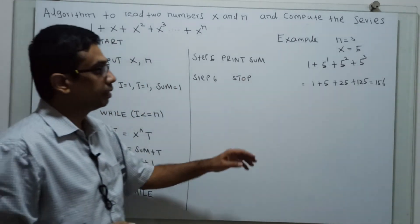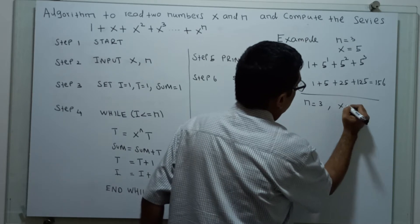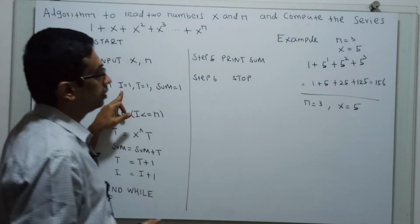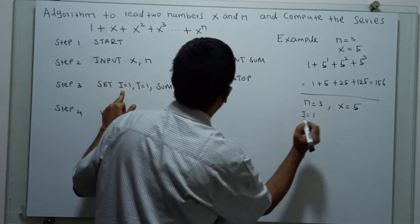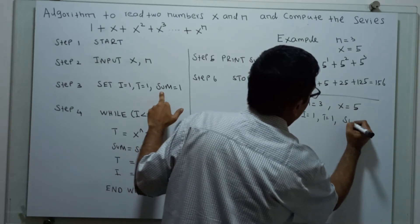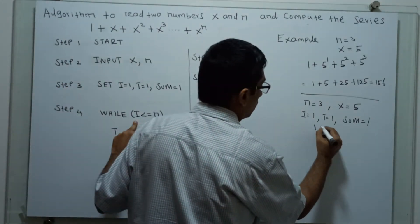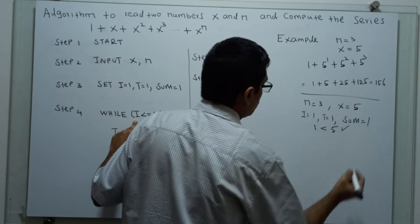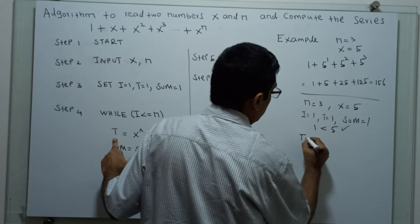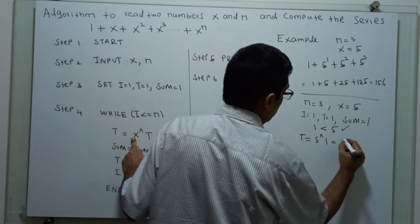I will explain how the algorithm works. For example, with n equal to 3 and x equal to 5, the initial values are i equal to 1, t equal to 1, and sum equal to 1. We compare i less than or equal to n — 1 is less than 3, so the condition is true. Then t equal to x power t, so t equal to 5 power 1, which equals 5.